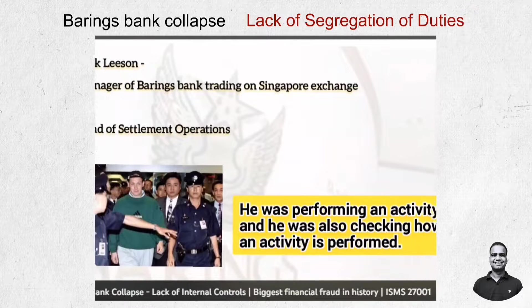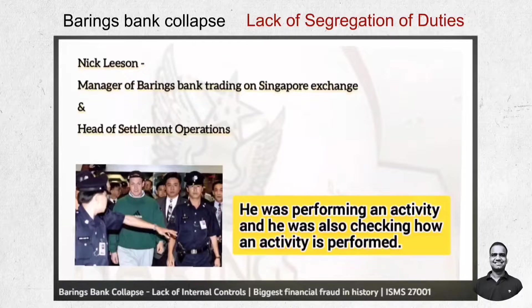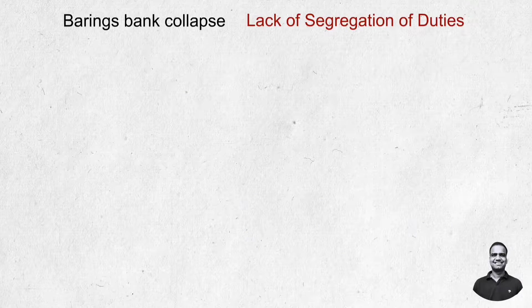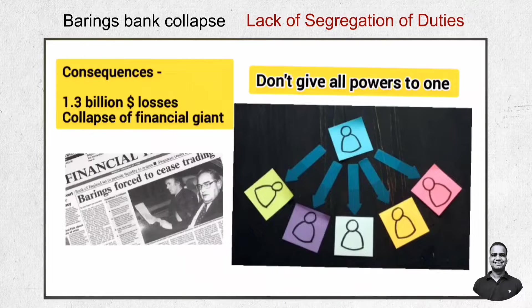The individual was Nick Leeson, manager of Barings Bank's trading on the Singapore International Monetary Exchange, and at the same time head of settlement operations — meaning he was in charge of accurate accounting as well. He was both performing an activity and checking how those activities were being performed, roles that should normally be held by two different persons. The consequences were 1.3 billion dollars in losses and the collapse of Barings Bank. Organizations must ensure that creating, recording, approving, and processing transactions are handled by different individuals.